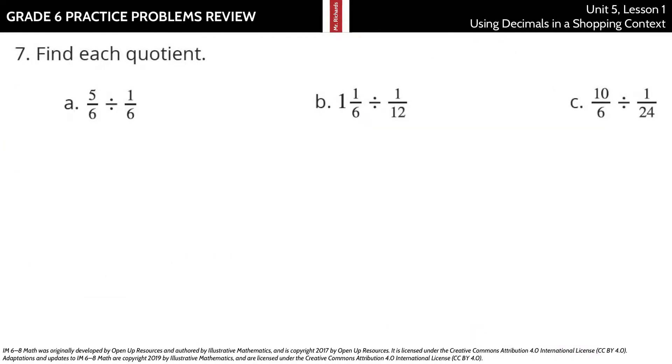Find each quotient. Well sounds like we're keep change flipping right? Keep, change, and actually flip. Divide by 6 there and there to simplify this and you get the 5 times 1 is 5, 1 times 1 is 1, so your solution here is 5. 5/6 divided by 1/6 is 5.